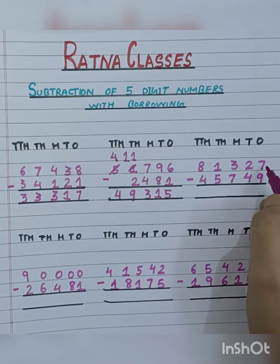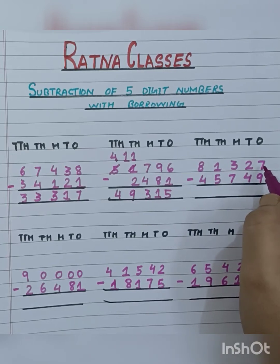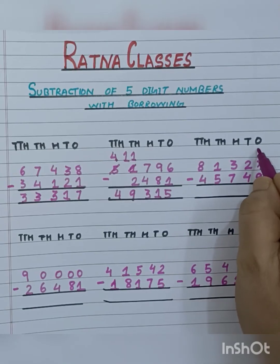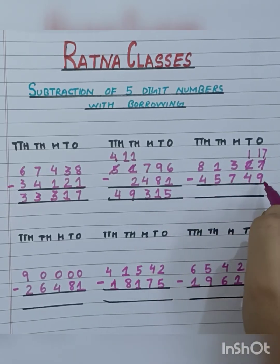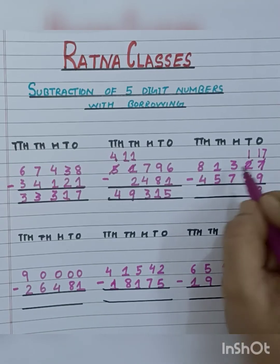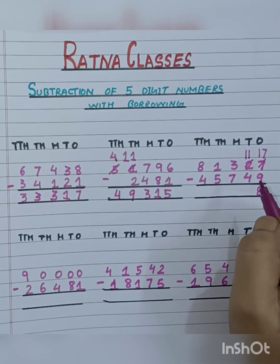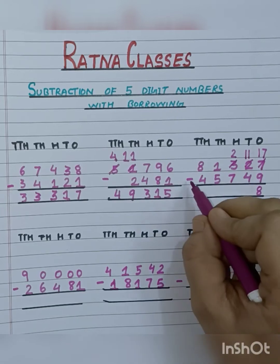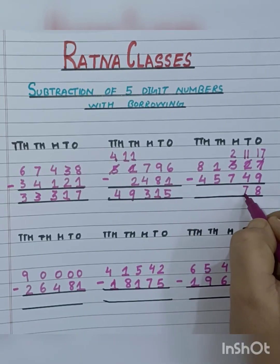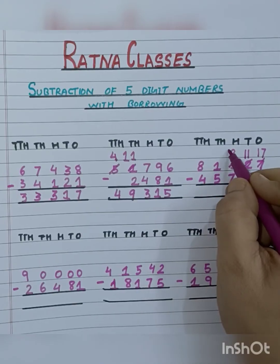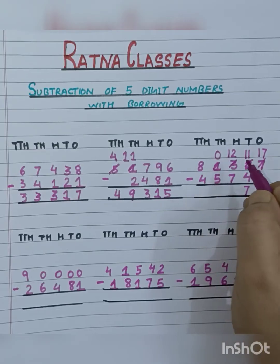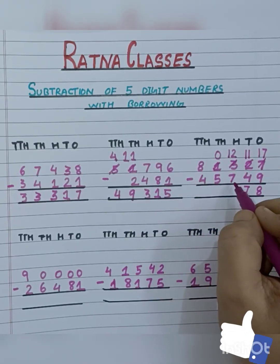Our next sum is 81,327 minus 45,749. First we will subtract the number at the 1's place: 7 minus 9 — as we can't subtract 9 from 7, we will take borrow from the 10's place. So 7 will become 17 and 2 will become 1. Now 17 minus 9 is 8. Again we can't subtract 4 from 1, so we will take borrow again. So 1 will become 11 and 3 will become 2. 11 minus 4 is 7. Now again we can't subtract 7 from 2, so we will take borrow from the 1000 place. So 2 will become 12 and 1 will become 0. Now 12 minus 7 is 5.